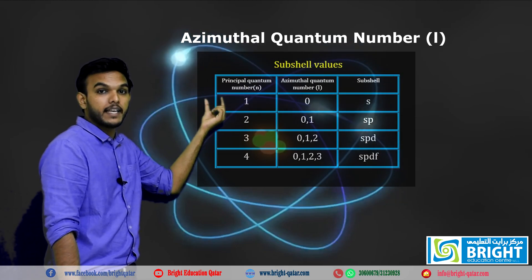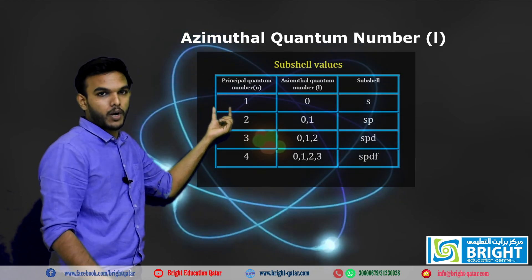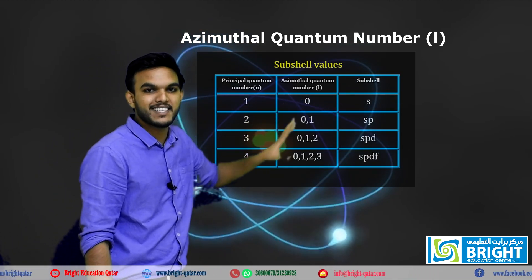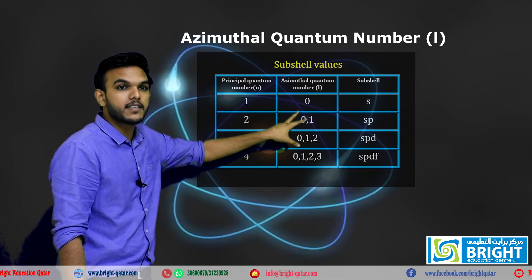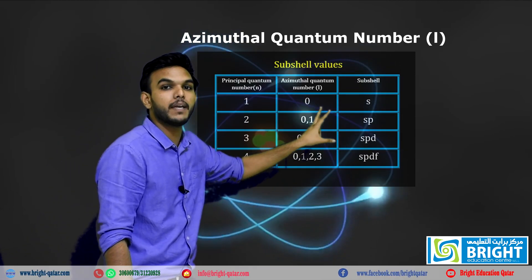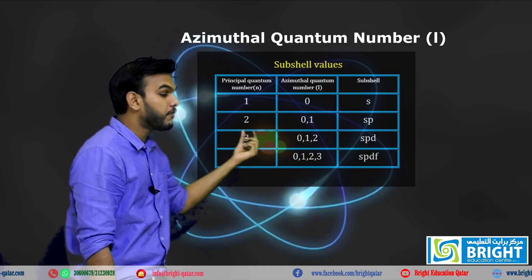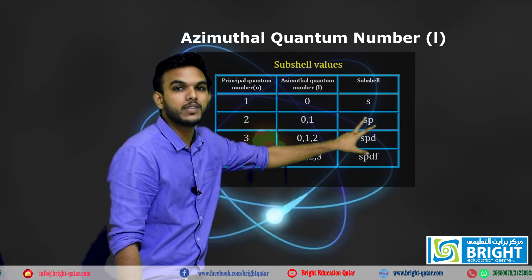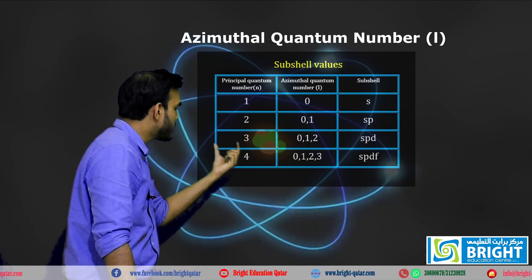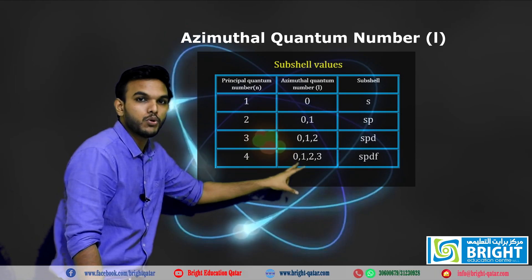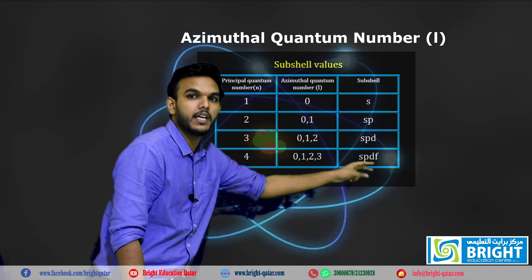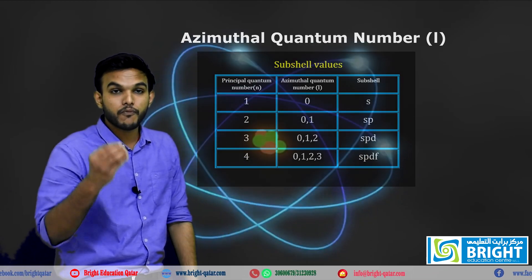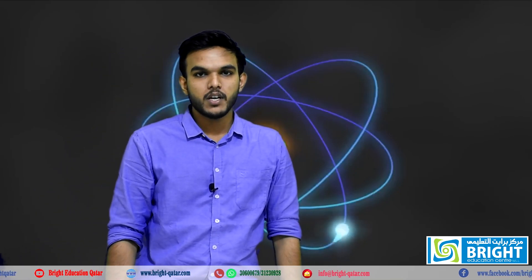The relationship between the principal quantum number n and the azimuthal quantum number l is as follows. If n is equal to 1, l is equal to 0 — the subshell is s. If n is equal to 2, l is equal to 0 and 1 — that is s and p, two subshells. If n is equal to 3, l is equal to 0, 1, and 2 — s, p, d. If n is equal to 4, l is equal to 0, 1, 2, and 3 — s, p, d, f. These are the four subshells.